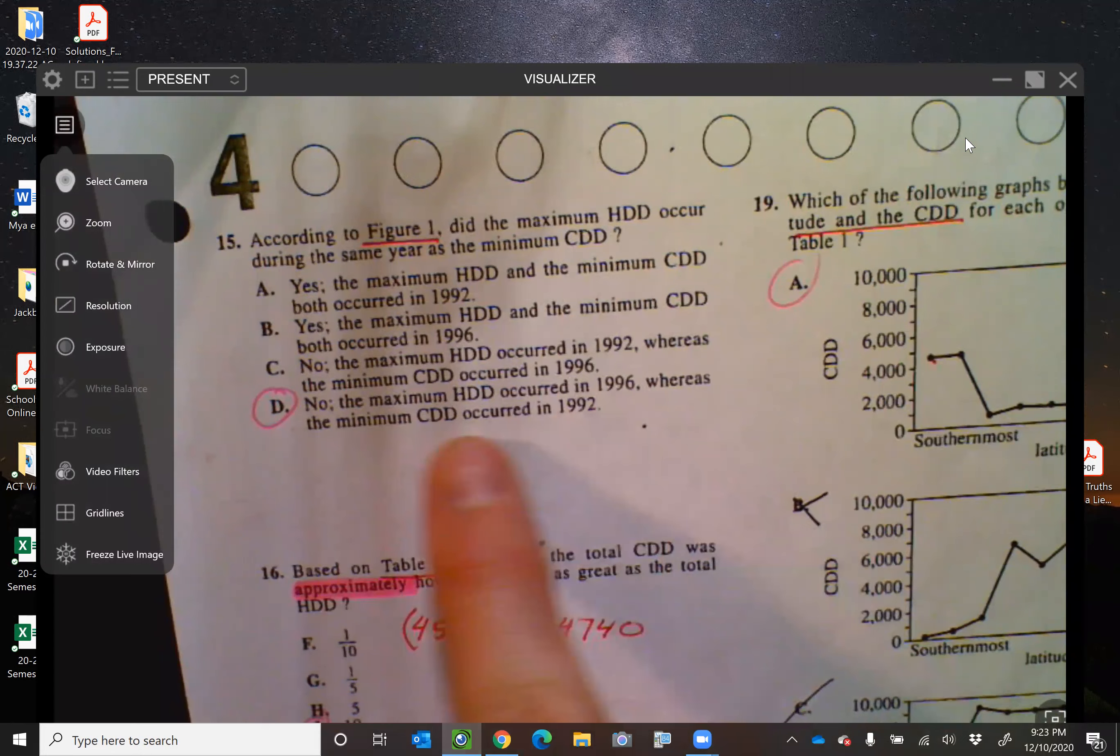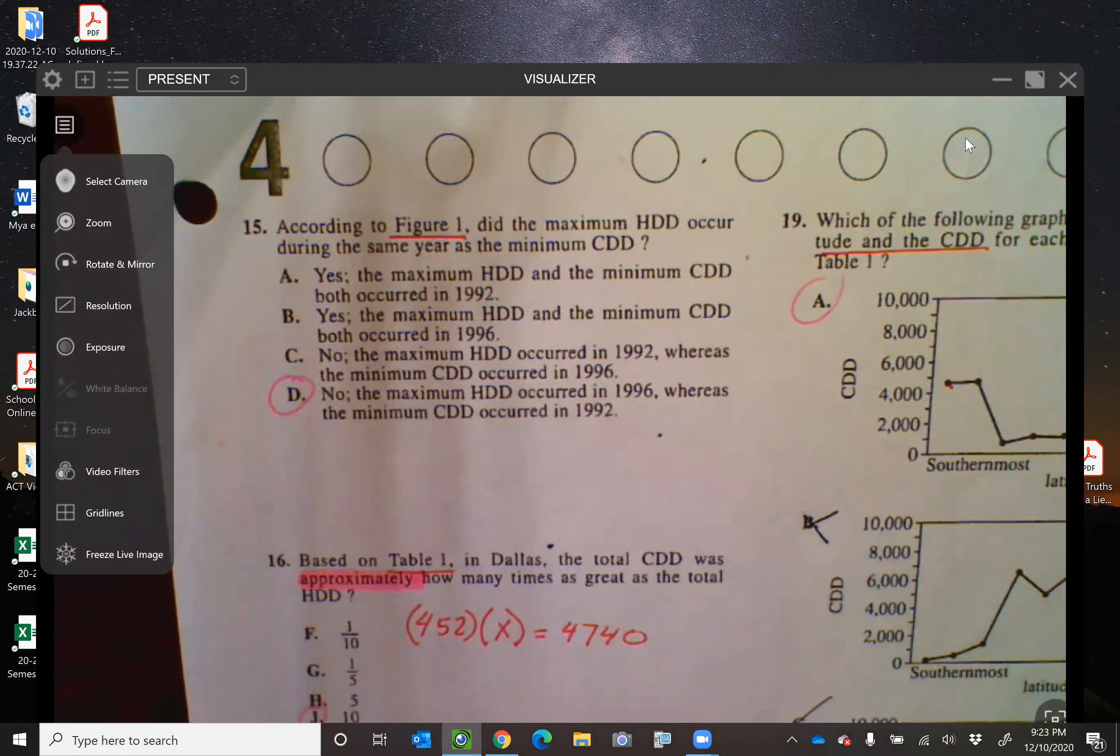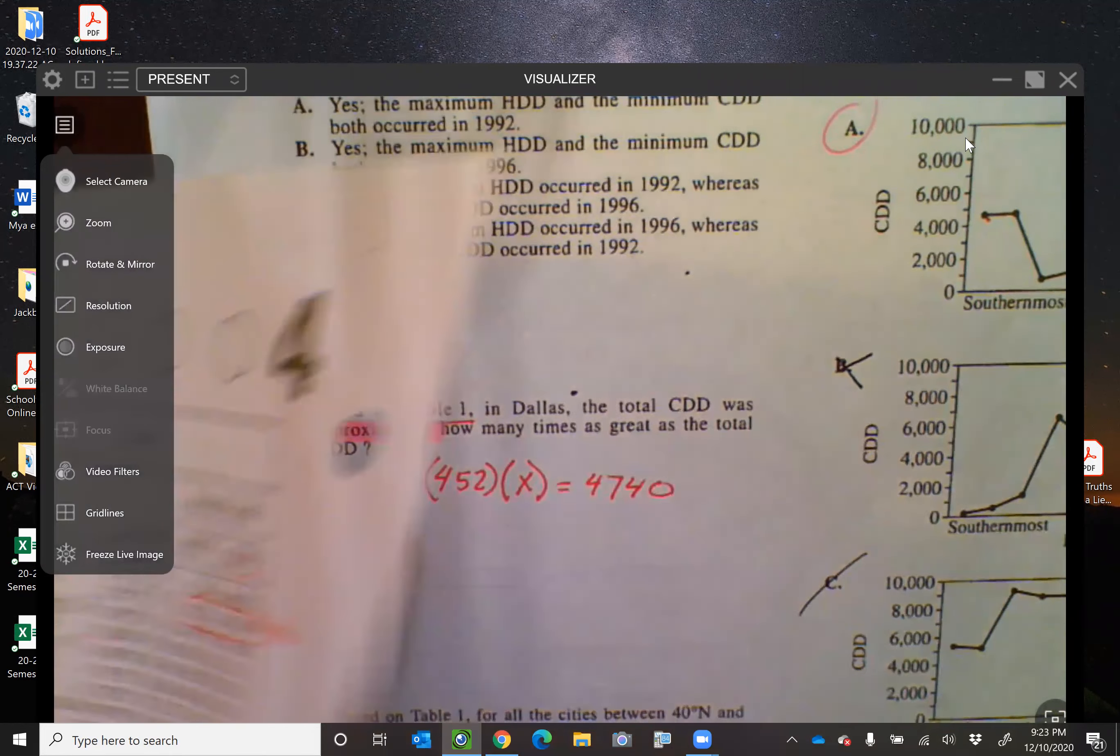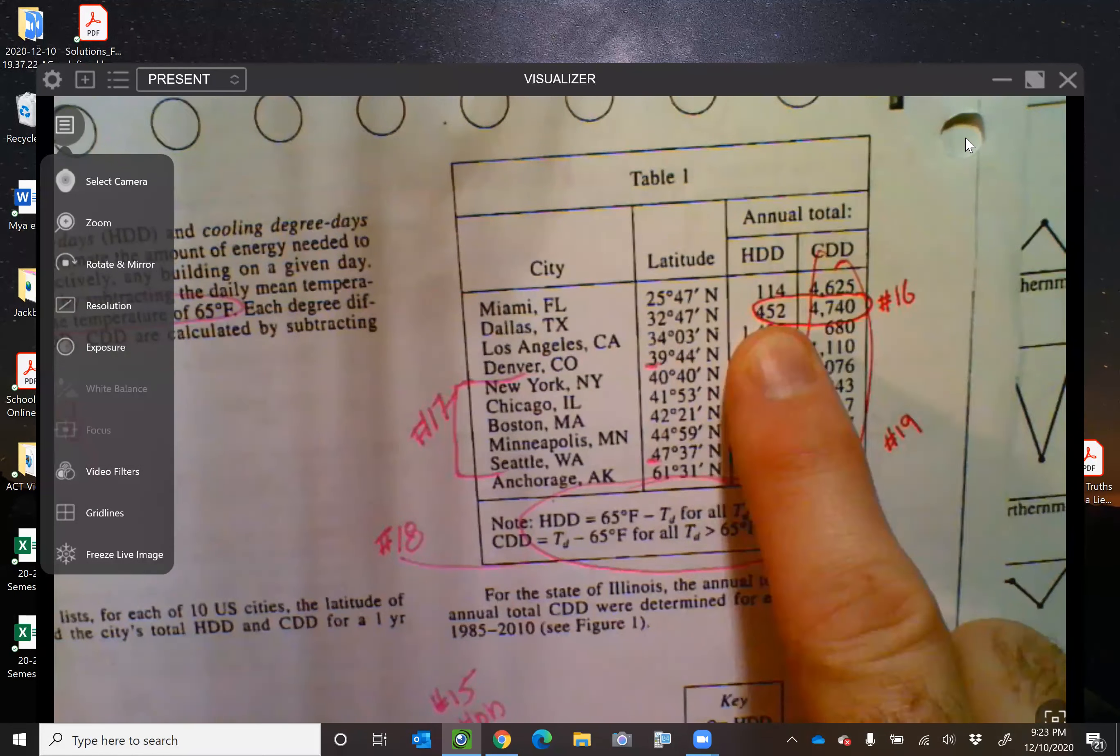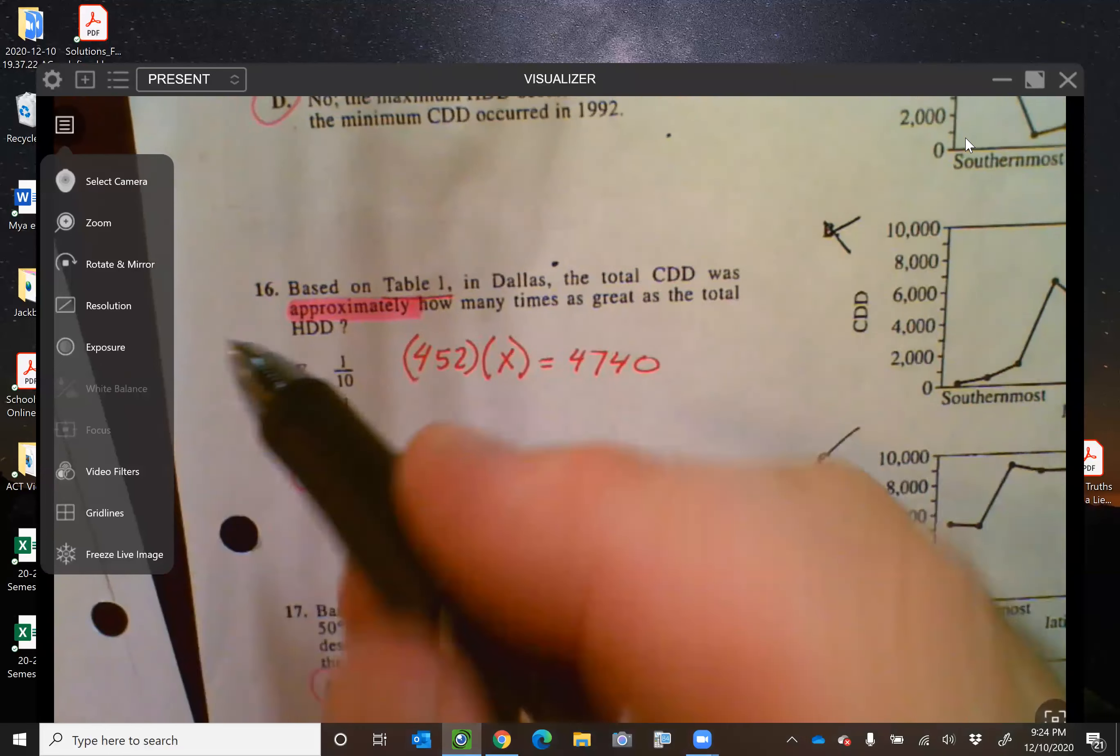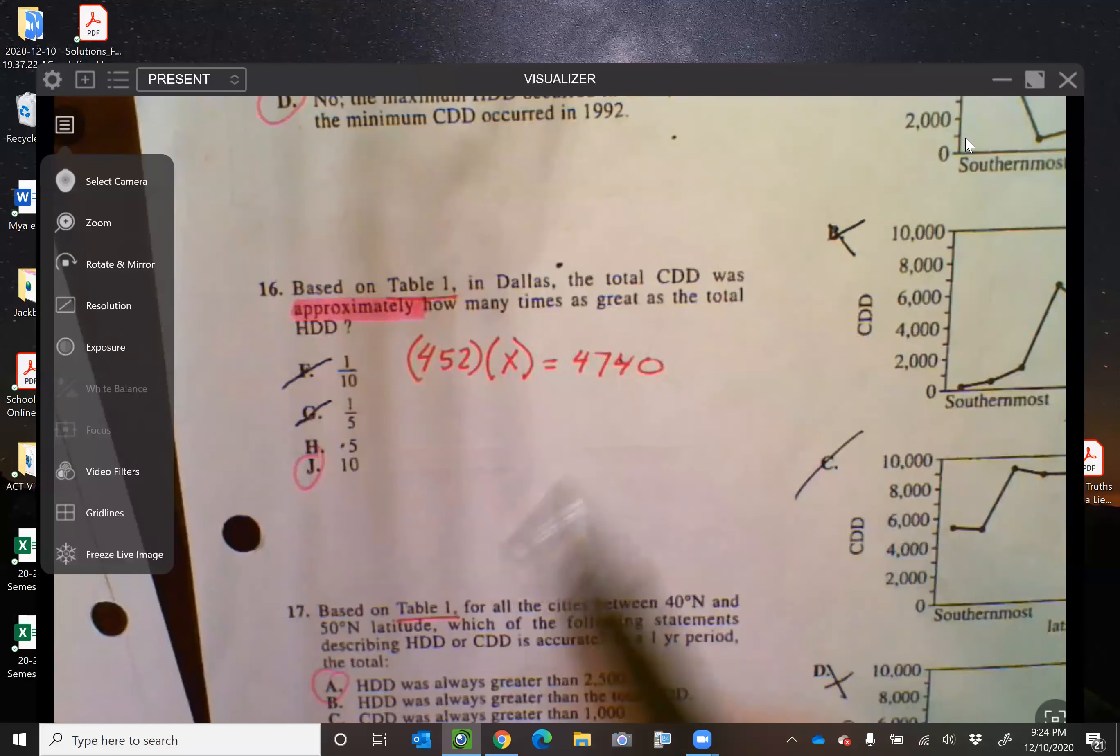You got to be careful because letter C has those backwards. So on the science section, really pay attention to that parallel structure. Number 16, based on table one, so we look at table one, in Dallas, the total CDD was approximately how many times as great as the total HDD? So here's Dallas. How many times bigger is the CDD than the HDD? Looking at these choices, it's got to be letter J, rather. And it's approximately, right? And we know it can't be these three, or those two, rather. And when I multiply by five, five times that 452, it's not even coming close.